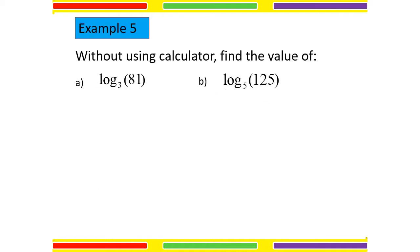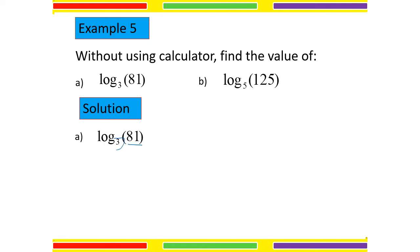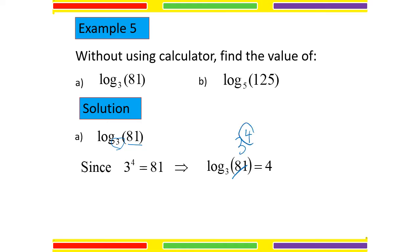For example 5, without using a calculator, find the value of log base 3 of 81 and log base 5 of 125. We have to apply the law of logarithm. For question A, change 81 into a value with base 3. Since 3 to the power of 4 equals 81, we change 81 into 3 to the power of 4. Using the power rule, bring 4 to the front: 4 times log base 3 of 3. Since log base 3 of 3 equals 1, the answer is 4.